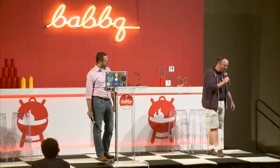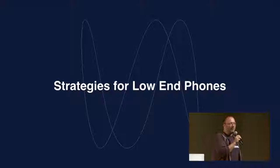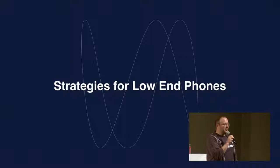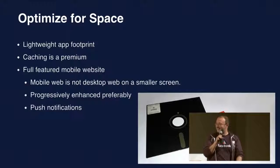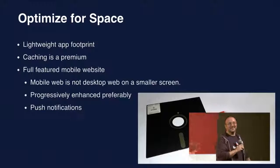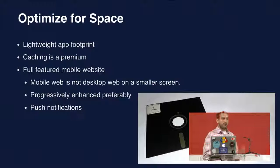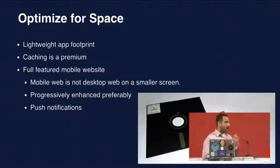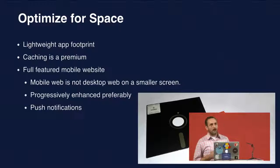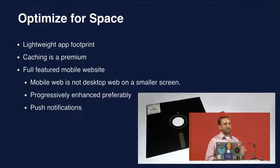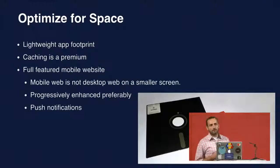Now, strategies for low-end phones — a completely different situation. In low-end phones you have actual limitations of the device and constraints you have to deal with. The biggest constraint is space. One of the biggest hardships for users is very low disk space, so upgrading your app or downloading a new app is very challenging — you have to delete one of the other four apps they can have on the phone. Developing an app with a lightweight footprint is paramount for these types of phones.